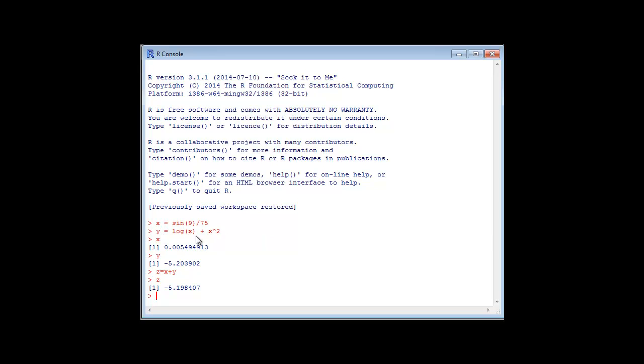Here on the R screen I have used the function x equal to sin of 9 divided by 75, another function y. The value of this can be used in another function z, z is equal to x plus y. I have used the value of x and y objects in another object z. For getting the output I will simply type z on the next line and enter. You will get the answer for your calculation.